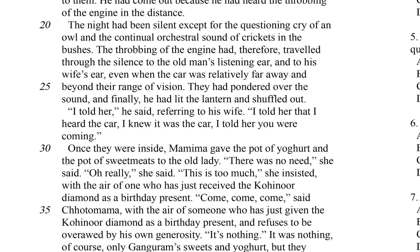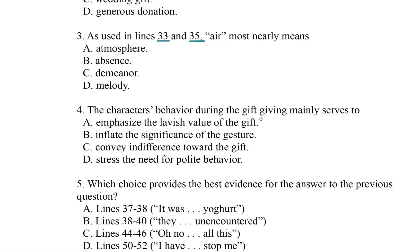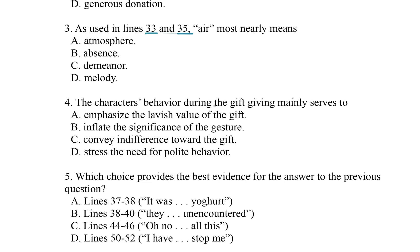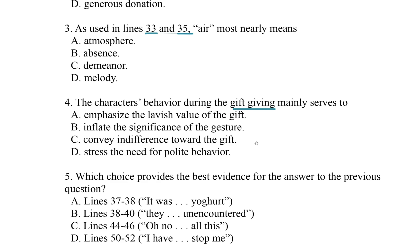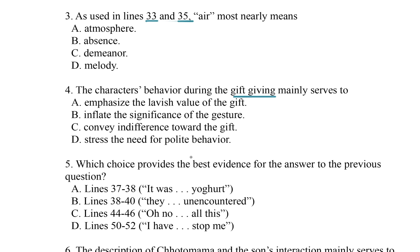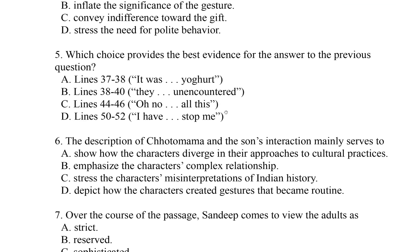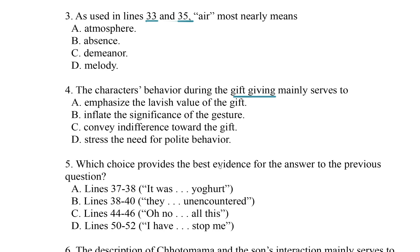There's line 30, 31, 32, 33 — 'air.' I'm going to underline that. And 34, 35 — 'air' again. That's question three; I'm going to put that in the sidebar. Question four: the characters' behavior during the gift-giving — so we're going to be on the lookout for when gift-giving happens. Question five is looking for textual evidence for the answer to question four, so we'll be on the lookout for that as we go through.